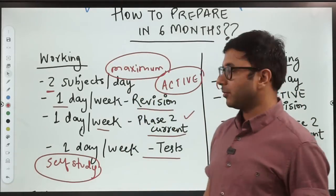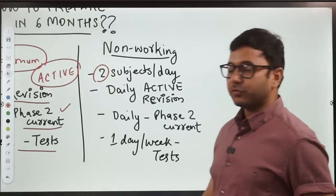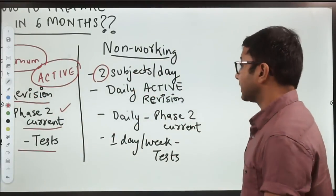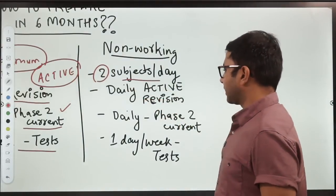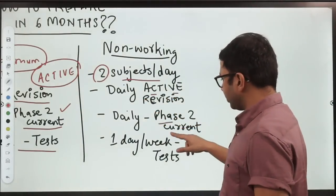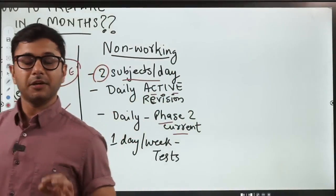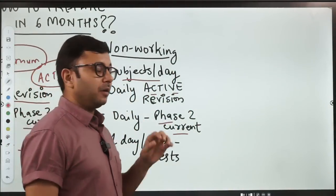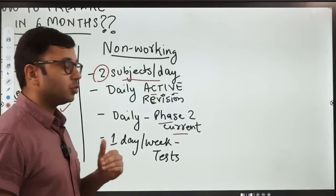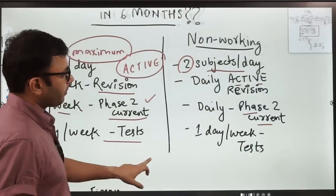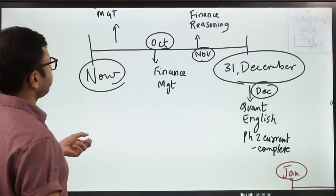If you're a non-working student, if you're studying full time, you get some advantage but the disadvantage is you have more anxiety because you're not financially independent. Two subjects per day is the maximum. Daily you have to do active revision and daily you have to cover phase two current. Please remember, current affairs you have to cover daily at this point of time. Active revision you have to do daily as you cover your syllabus.